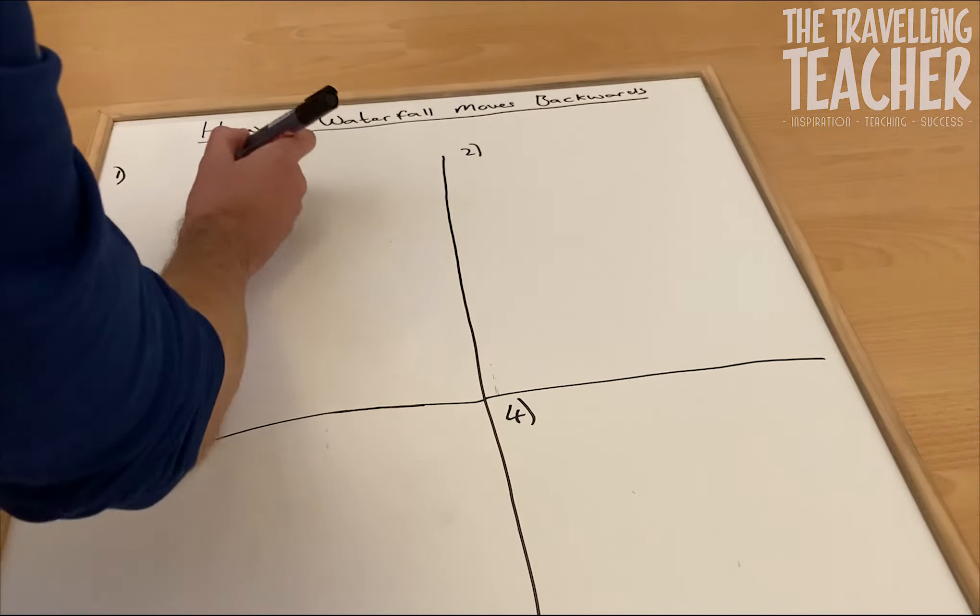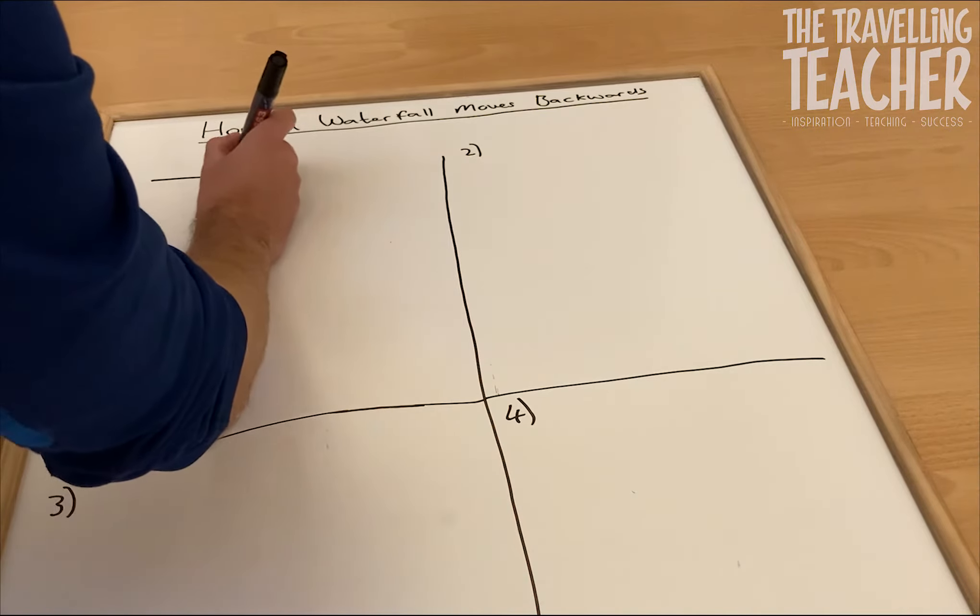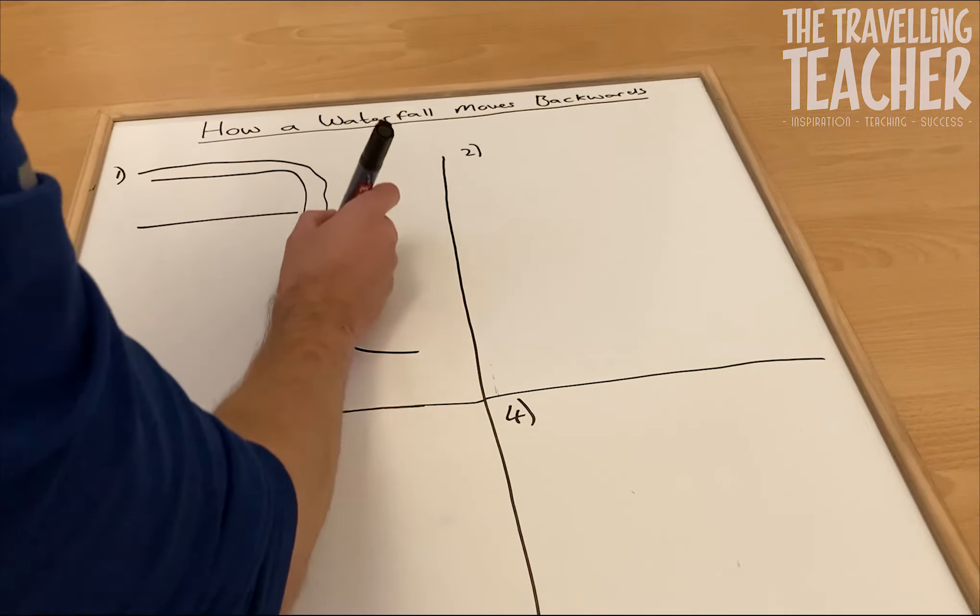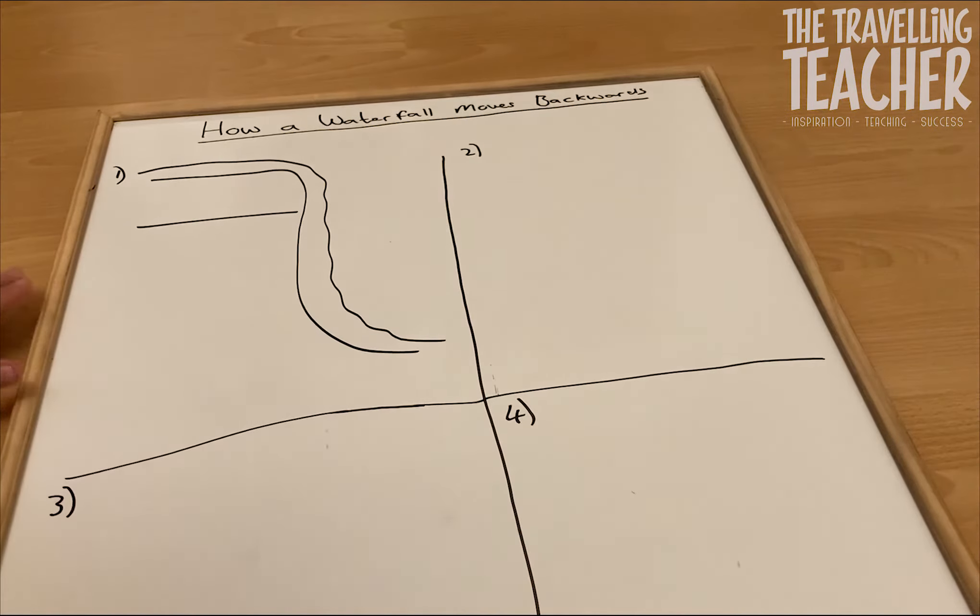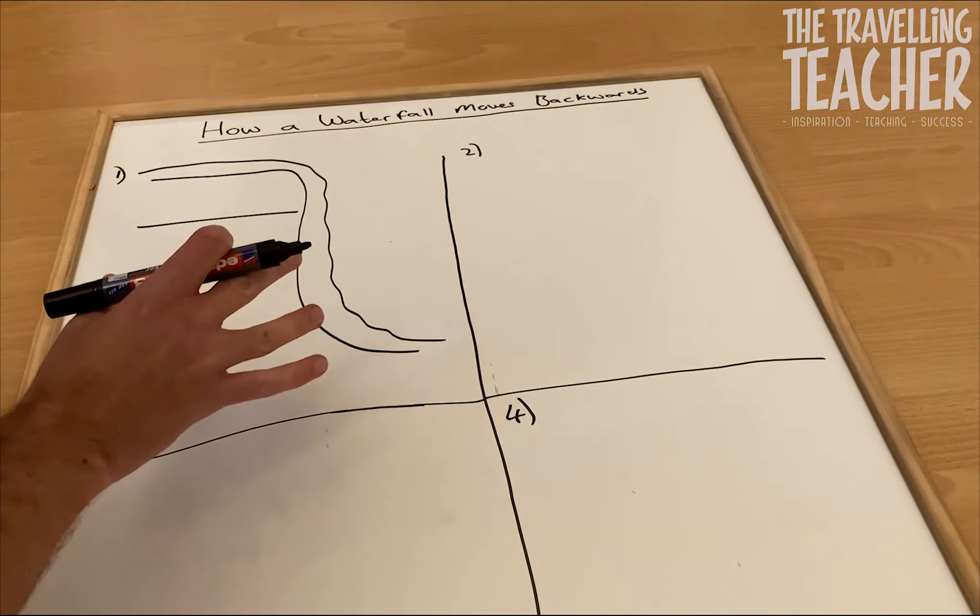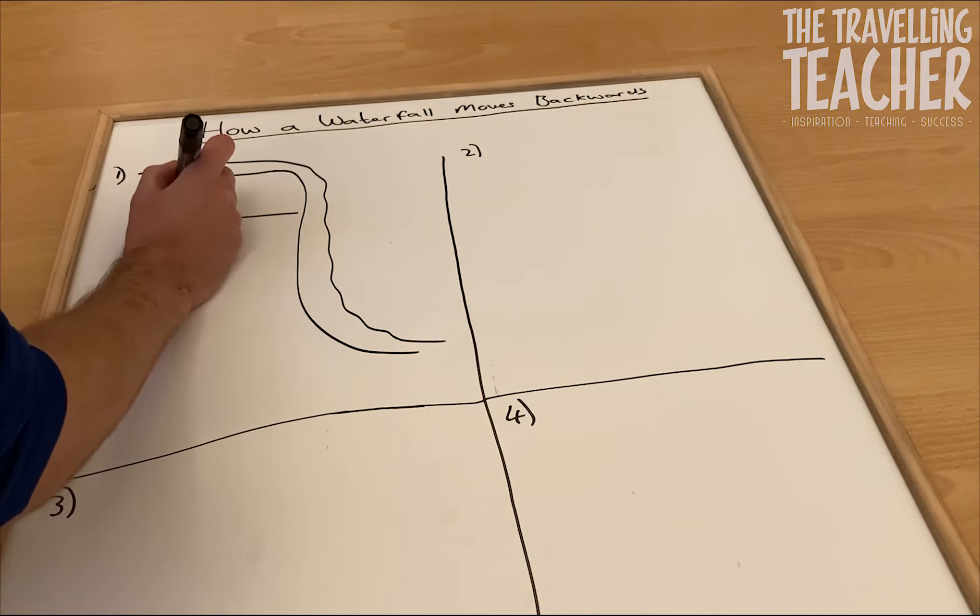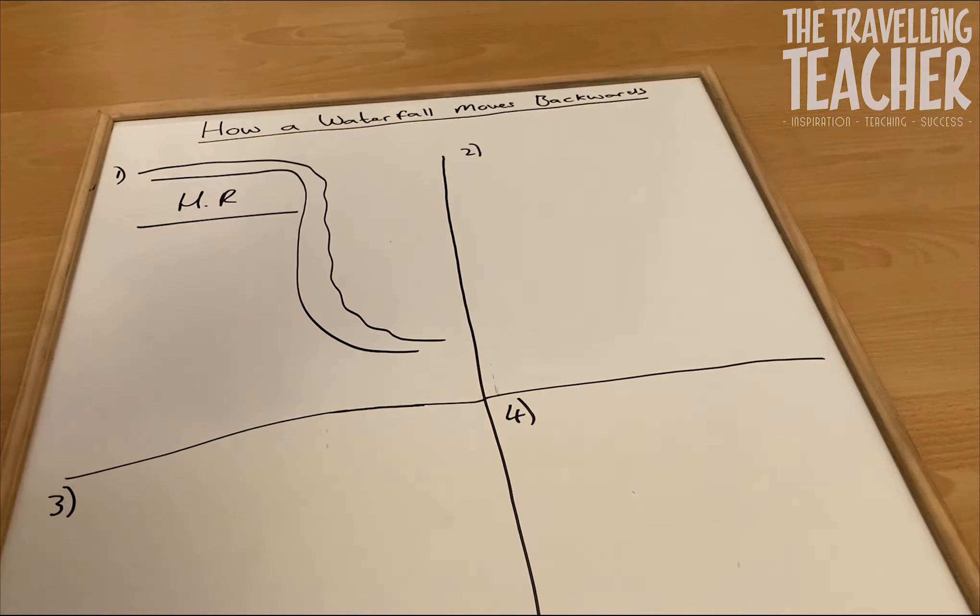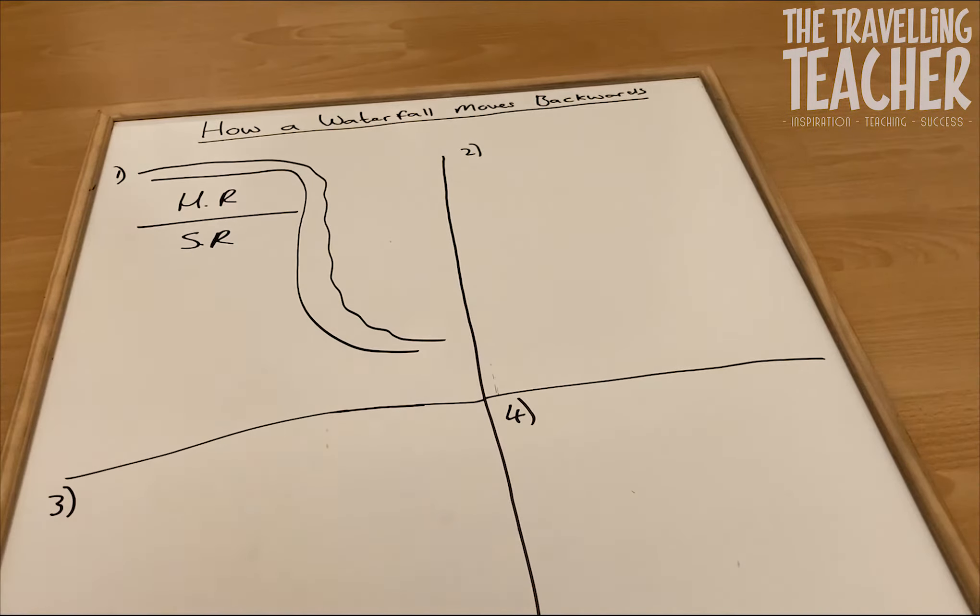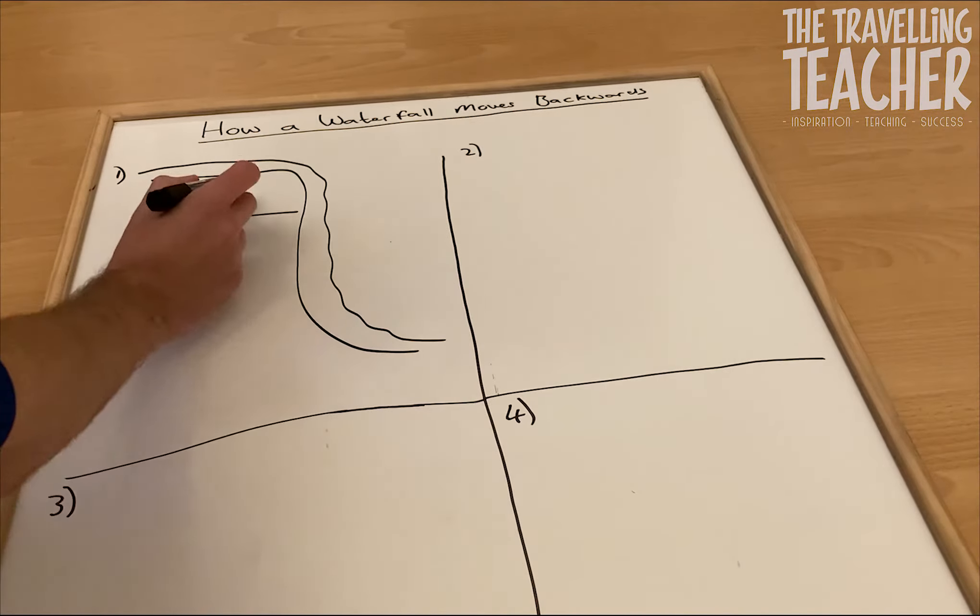Right, first thing I'm going to do is draw our waterfall. There's our waterfall and there's our water going over the top. So with a waterfall it's made up of two bands of rock. We have hard rock, I'm going to write HR for short, and soft rock, so I'm going to write SR for short there. So hard rock and soft rock.